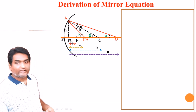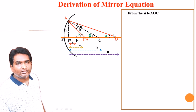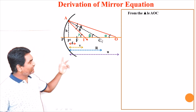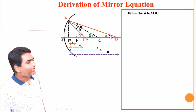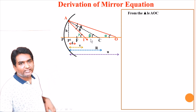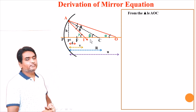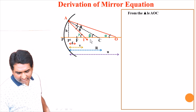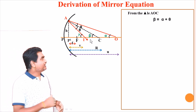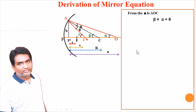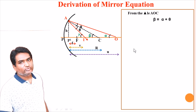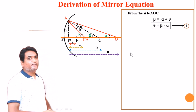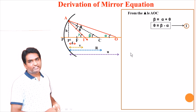Let us start with the first triangle — triangle A-O-C. In this triangle we have two internal angles: theta and alpha, and one external angle: beta. The rule is the external angle equals the sum of the opposite internal angles. That is, beta equals alpha plus theta, so theta equals beta minus alpha. Let us name this equation 1.